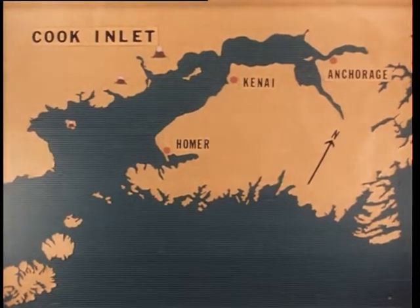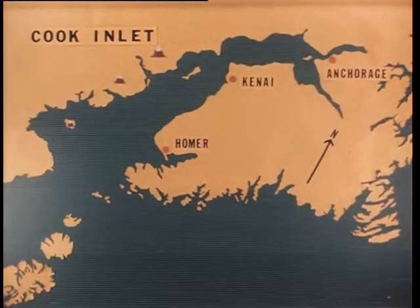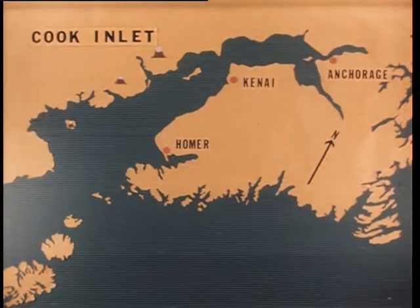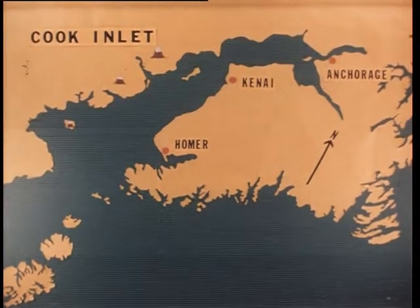The inlet is some 200 miles long. The narrow region two-thirds of the way up the inlet, just to the north of Kenai, is the Forlans region.